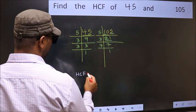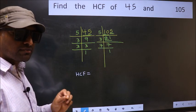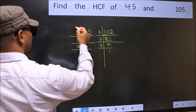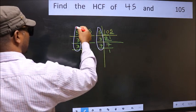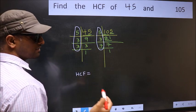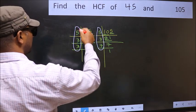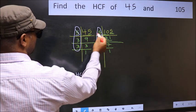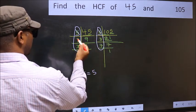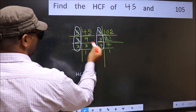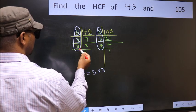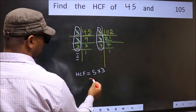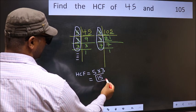Therefore, our HCF is the product of the numbers which are present in both factorizations — here and here. Starting with 5: do we have 5 in both? Yes, so we take 5. Next, 3: do we have 3 in both? No more common numbers remain. So our HCF is 5 × 3 = 15.